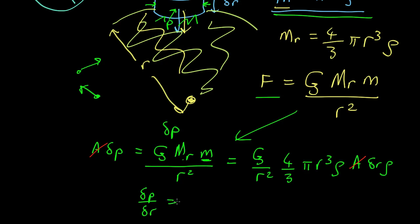And that comes out as 4 thirds pi. We've got R cubed over R squared. So it just comes out as R G times the density squared.